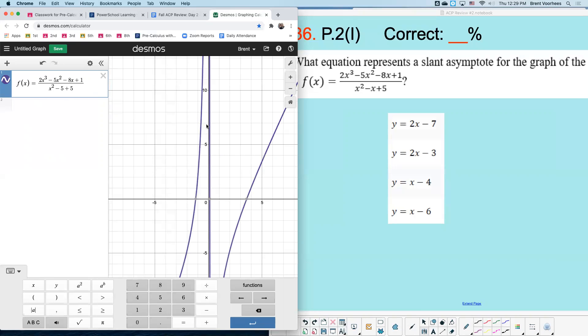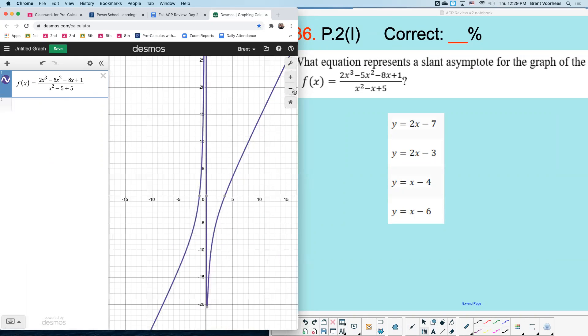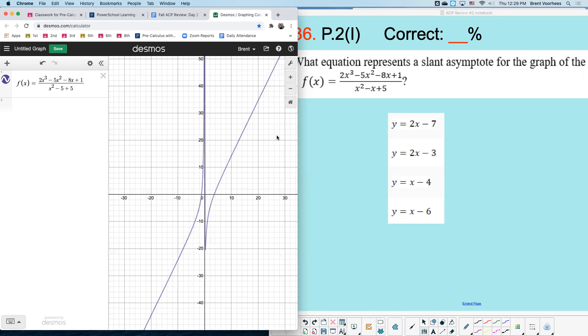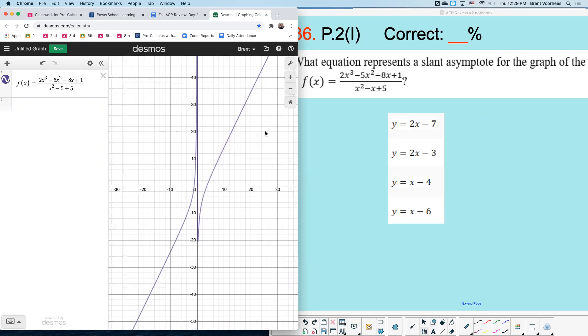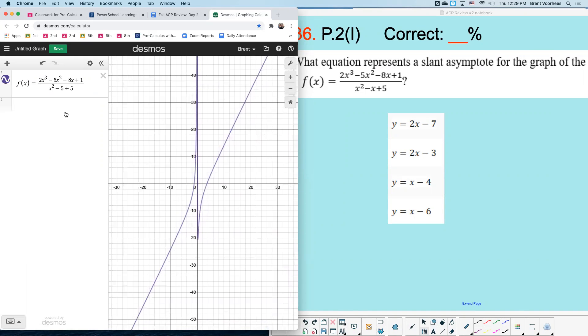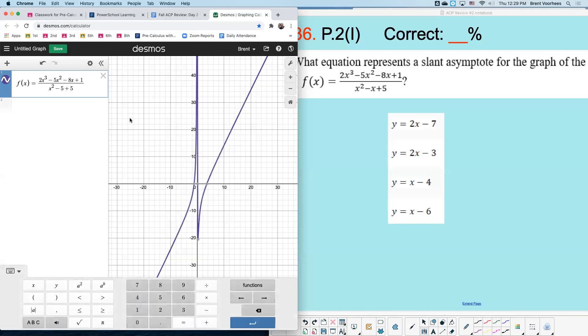So I have this graphed in. I'm going to zoom out a little bit so you can see the graph a little bit better. 2x cubed minus 5x squared minus 8x plus 1 over x squared minus 5. Oh, minus, that's supposed to be an x. There it is, minus x plus 5. Now my graph is correct.